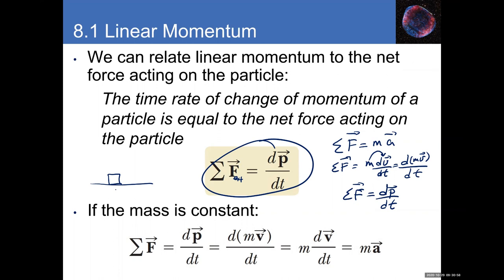As a simple example: a box at rest has zero initial momentum. If we apply a force, the box starts moving and now has momentum — we changed it. Applying force changes velocity, which changes momentum. You can also change momentum by changing mass — for example, if a box explodes into smaller pieces. But for our purposes, we'll mostly deal with constant mass, which is why F = ma is the convenient form we typically use.